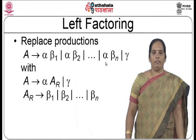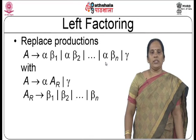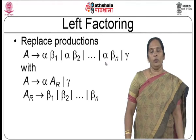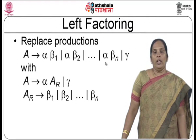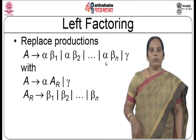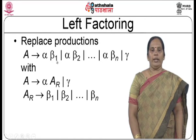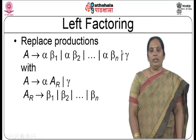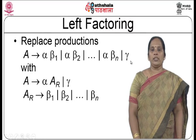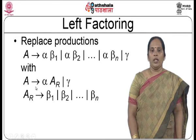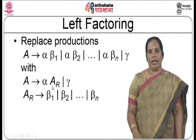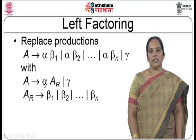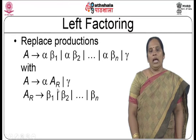In the last module we discussed left recursion elimination. Left recursion is when A produces A-alpha or beta, and that production should be converted so the left-heavy grammar becomes a right-heavy grammar to avoid backtracking. Similarly, if we have productions of the form alpha-beta-1, alpha-beta-2, up to alpha-beta-n or gamma, all these n productions require left factoring because the prefix is the same. We replace them with a new non-terminal AR: A produces alpha-AR or gamma, and AR produces beta-1, beta-2, up to beta-n.